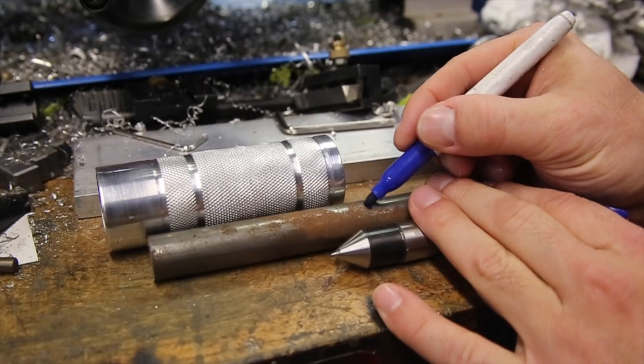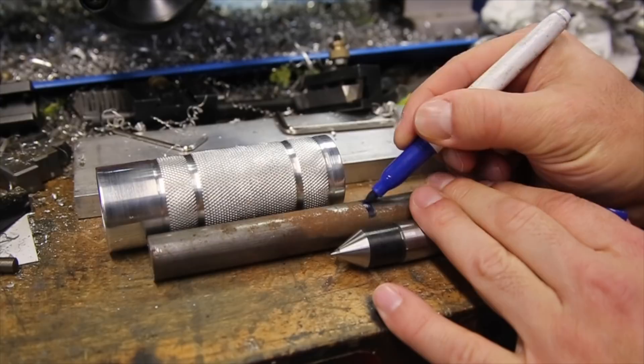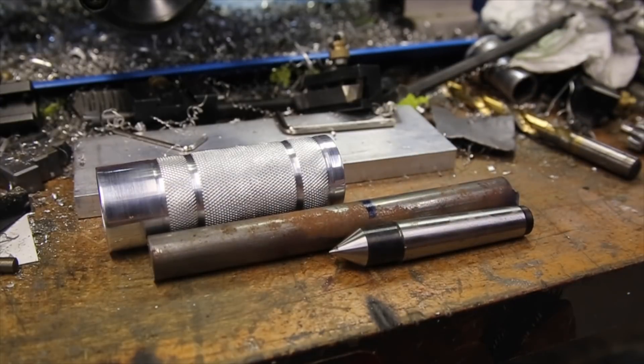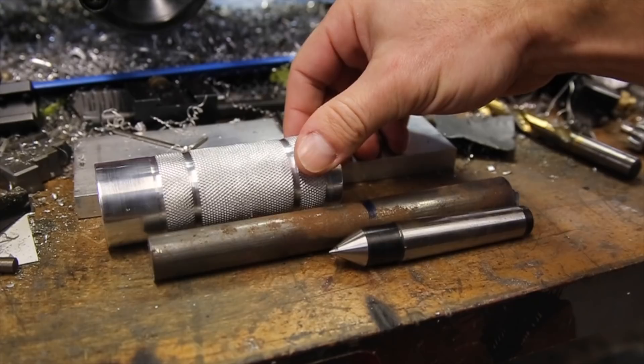I marked the split between which side needs to be square, for lack of better words, and the side that needs to be tapered. It's less the length of this part that matters and more the diameters.